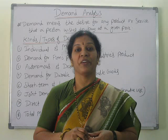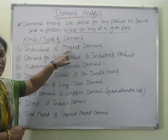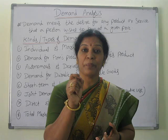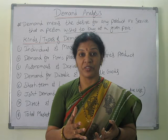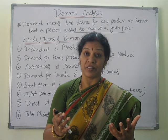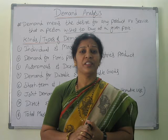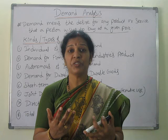Now we will see the types of demand. There are eight types of demand. The first is individual and market demand. Individual demand means only one consumer is willing to buy a particular product. Market demand covers the entire market — many people willing to buy products. For example, Sony electronics: TV, phone, and computers — many people willing to buy these products is market demand. Individual demand is demand for one apple, one computer, one guitar. Market demand is the total demand for computers, ACs, etc.